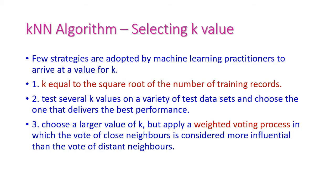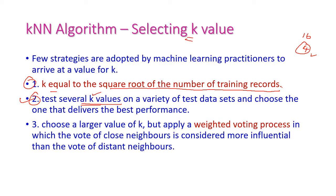Some suggestions for selecting K: First, K can be set to the square root of the number of training records — for 16 records, K=4. Second, test several K values and choose the one giving the best performance. Third, choose a larger K value but use a weighted voting process, where the nearest neighbor gets more weight compared to farther neighbors.